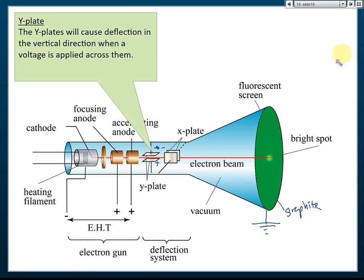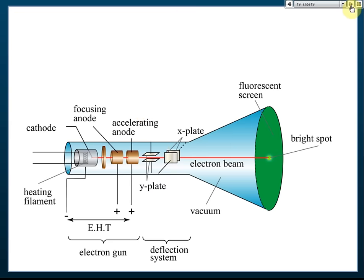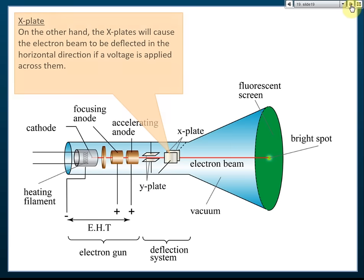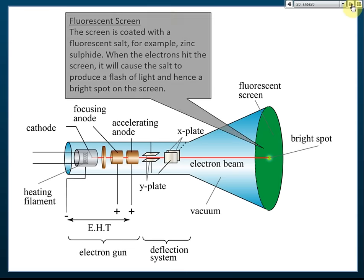To summarize the functions of each component: the Y plates deflect the beam up and down; the X plates deflect the beam left and right; and the fluorescent screen absorbs light energy to produce a bright spot.